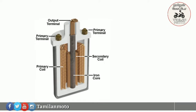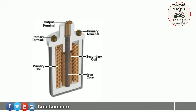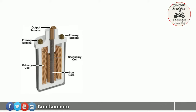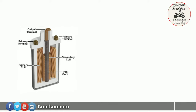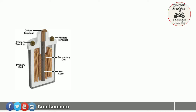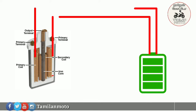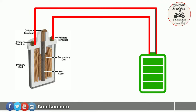The structure is like this: the outer coil is the primary coil, and the inner coil is the secondary coil. When we pass battery current through the primary coil, it produces electromagnetic waves.